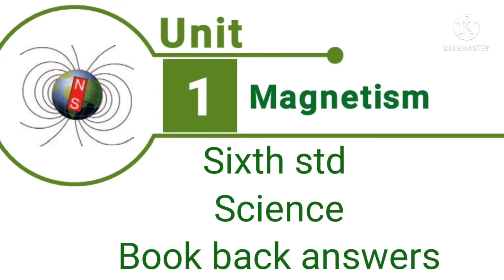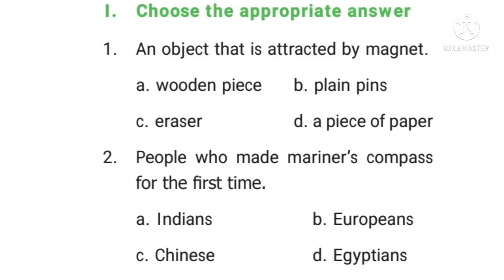We are going to see the answers for 6th Standard Science Magnetism. Question 1: An object that is attracted by magnet. Answer is plain pins.